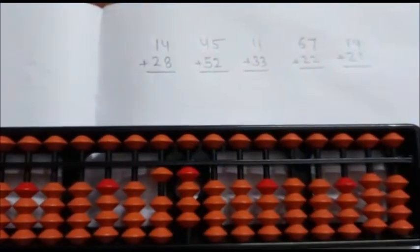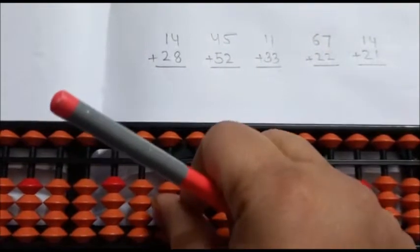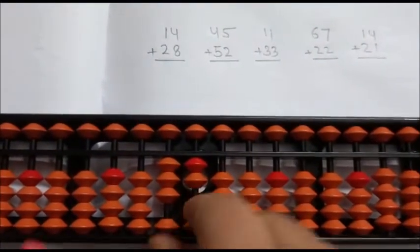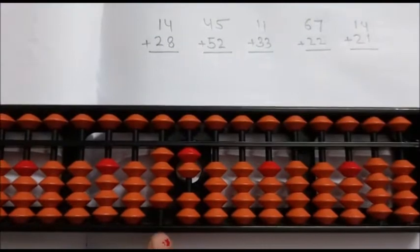1, 4. 14 is direct. 28: 2 is direct. 8 is minus 2 plus 10. Answer is 42.